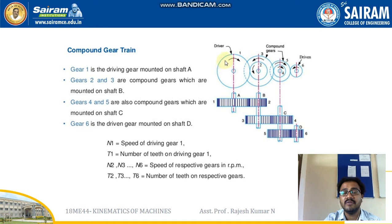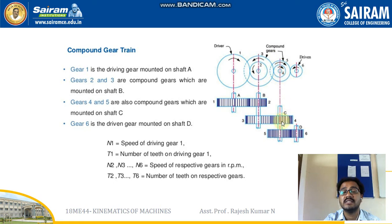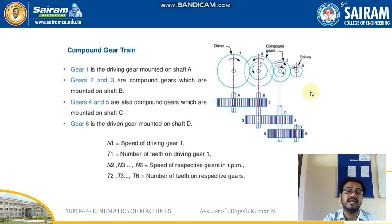If the driver is rotating in the clockwise direction, then gear 2 and gear 3 together rotate in the anti-clockwise direction. Since gears 2 and 3 on shaft B rotate anti-clockwise, gear 4 and gear 5 on shaft C rotate clockwise. And since shaft C rotates clockwise, shaft D rotates in the anti-clockwise direction.